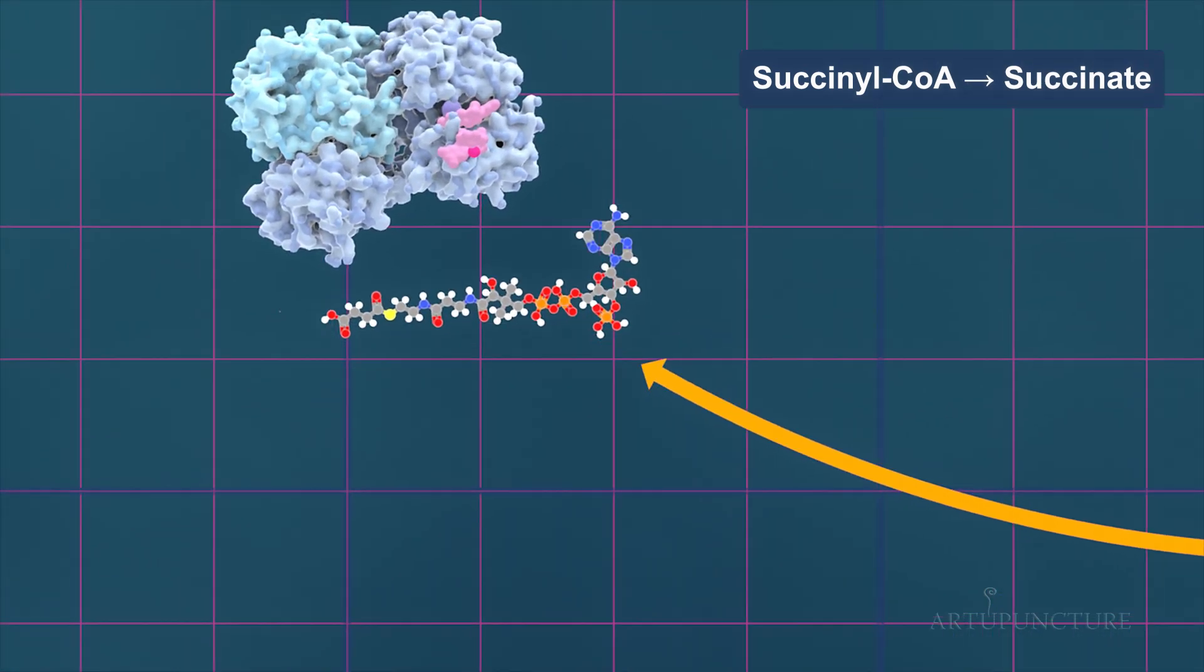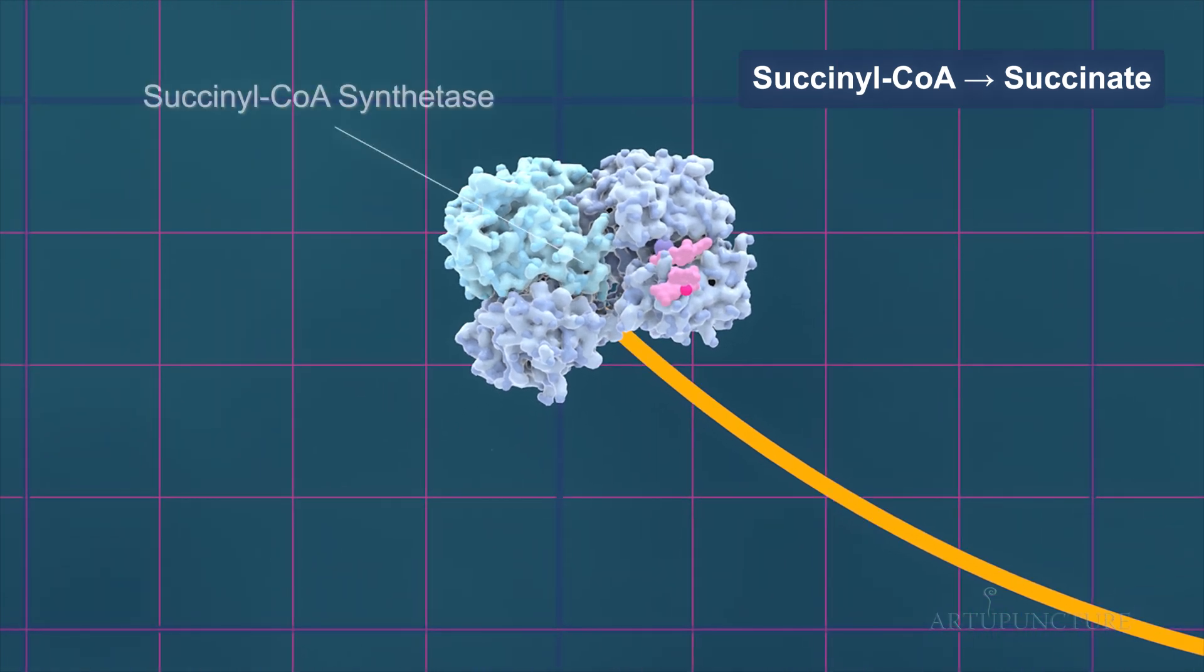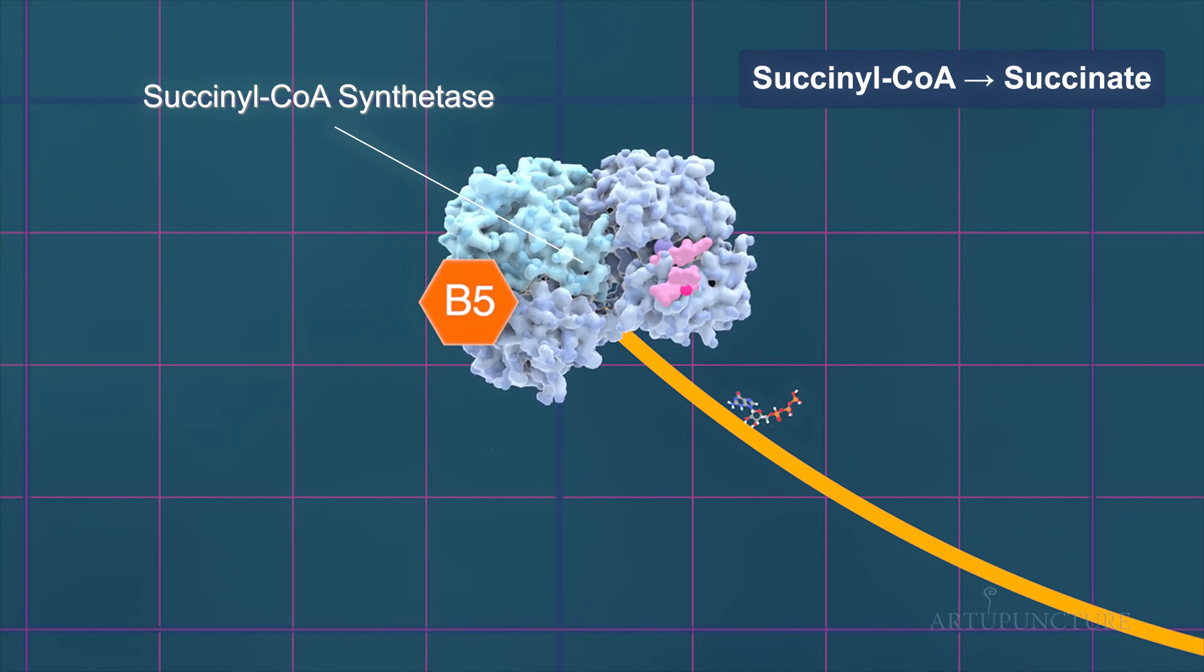Succinyl-CoA is transformed into succinate by the enzyme succinyl-CoA synthetase. Vitamin B5 plays a vital role in creating coenzyme A. A phosphate group is transferred from GTP to ADP, and by incorporating inorganic pyrophosphate, ATP is formed.